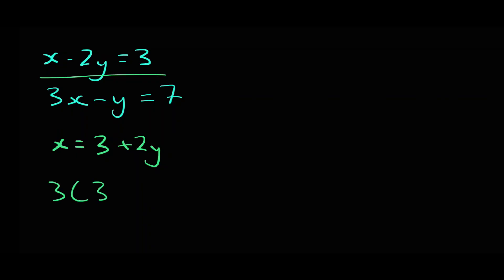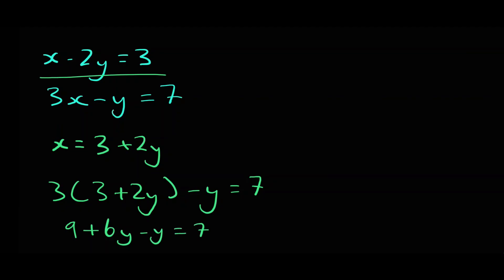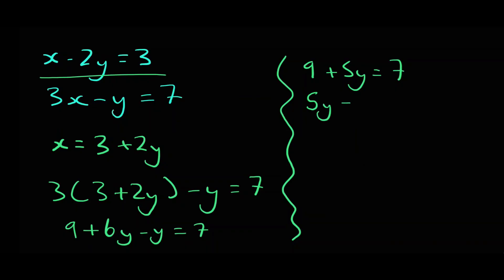So 3 times (3 plus 2y) minus y equals 7, which means 9 plus 6y minus y equals 7. Collecting like terms gives 9 plus 5y equals 7. Isolating y by subtracting 9 from both sides gives 5y equals negative 2. Dividing both sides by 5, we get y equals negative 2 over 5.